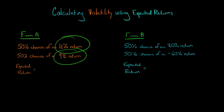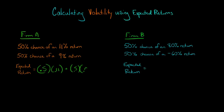If we were to calculate the expected return of firm A, we'd just end up having 0.5, which is the 1 out of 2 chance, 50% chance times 0.11, which is that return, and then 0.5 times 0.09. And this is just going to equal 0.10 or 10%.